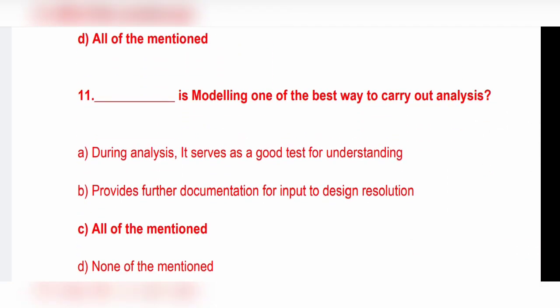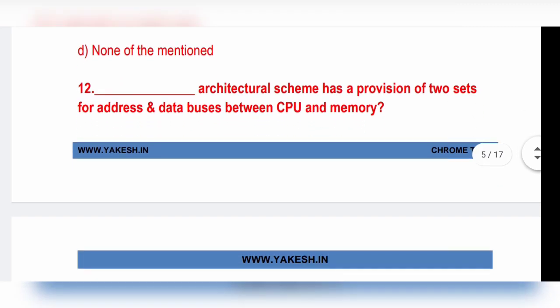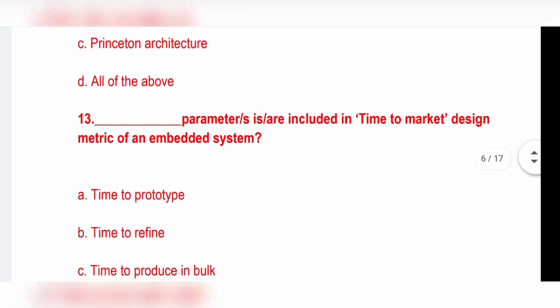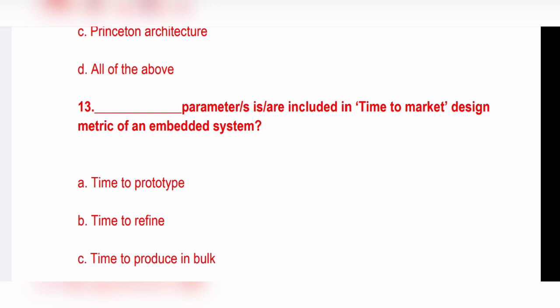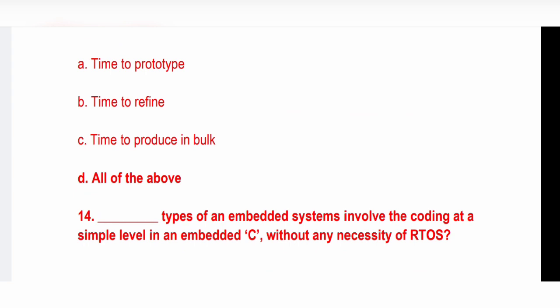Next question: Modeling is one of the best ways to carry out analysis. Option C, all of the mentioned. During analysis, it is a good test for understanding. Provides further documentation for input to design resolution. Harvard architectural scheme has a provision of two sets of addresses and data buses between CPU and memory. Option A, Harvard architecture is the correct answer. Time to market design metric of an embedded system includes: time to prototype, time to refine, time to produce in bulk.